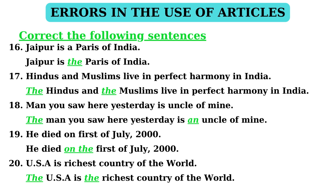In sentence 17: 'Hindus and Muslims live in perfect harmony in India.' When any scripture, sect, or community is mentioned, definite article 'the' is to be added. The correct statement is: 'The Hindus and the Muslims live in perfect harmony in India.' In sentence 18: 'Man you saw here yesterday is uncle of mine.' Here, a relation is referred to, so we have to add definite article 'the'. The correct statement is: 'The man you saw here yesterday is an uncle of mine.'